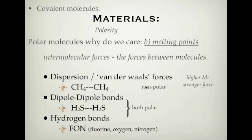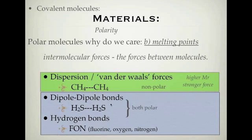To summarize: dispersion forces are for non-polar substances; dipole-dipole and hydrogen bonds are both for polar substances, with hydrogen bonds occurring when fluorine, oxygen, or nitrogen is bonded to a hydrogen. These intermolecular forces are all a lot weaker than covalent bonds within molecules, weaker than ionic bonds, and weaker than metallic bonds. But they are the reason we have variations in the melting points of our compounds.